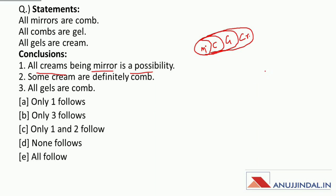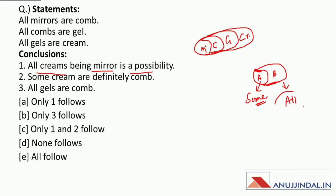All creams being mirror is a possibility — yes. Because we learned that when 'all A is B', jab all wala case tha, toh joh under wala circle hoota hai uske liye ek definite case possible hoota hai — that is 'some'. Aur joh bahar wala circle hoota hai, uske liye possibility mein 'all' wala case bilkul true hoota hai. So therefore, conclusion number one is absolutely correct.